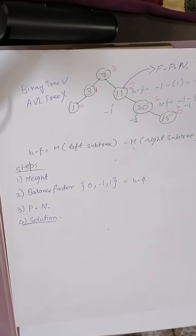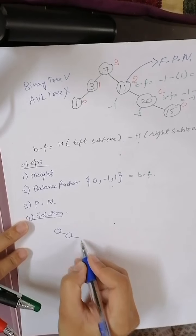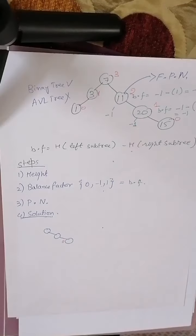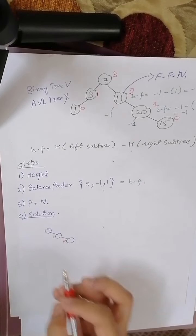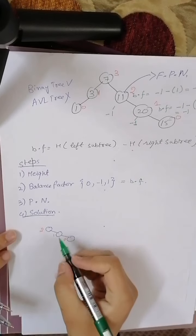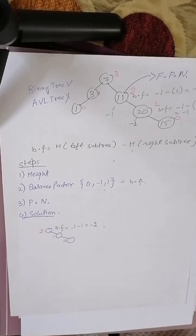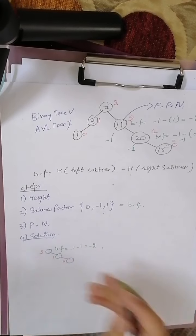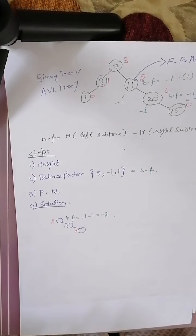Consider inserting nodes in a line: one node, then another to its right, then another further right. The height of the first leaf is zero, the next is one, and the root is two. The balance factor of the root is zero minus minus one, which is minus two — violating the range. This is case number one, where insertion goes right then right.